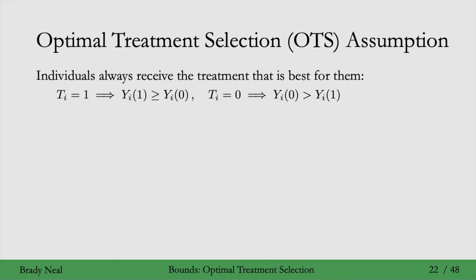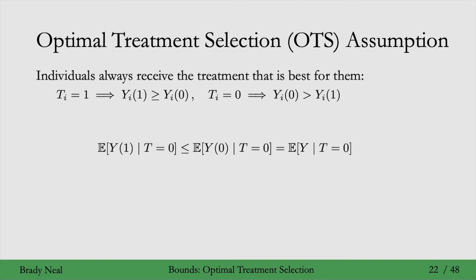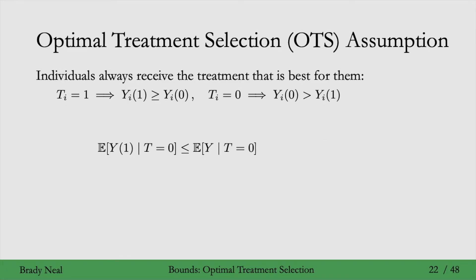How can the OTS assumption help us achieve bounds? It tells us that the expected potential outcome y1 in the control group is less than or equal to the potential outcome y0 in the control group. The potential outcome y0 in the control group equals the expected value of y given t equals 0 by the consistency assumption. This inequality is what we'll use to get an upper bound.